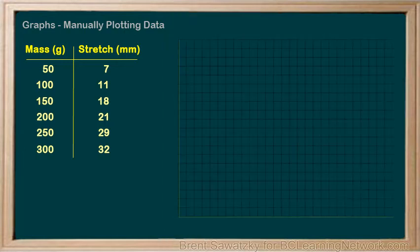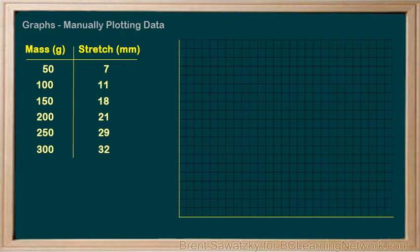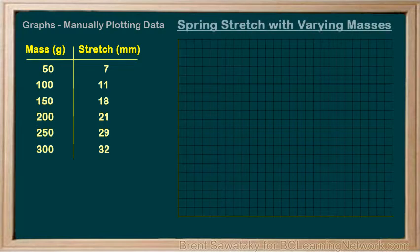We have a nice grid and we're ready to prepare our graph. Let's sort out the titles. The main title could be 'Spring Stretch with Varying Masses.' This could vary a bit depending on the scientist, but a good title will explain the situation similarly.